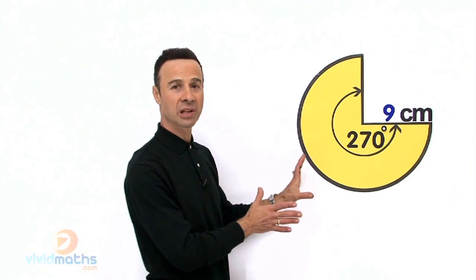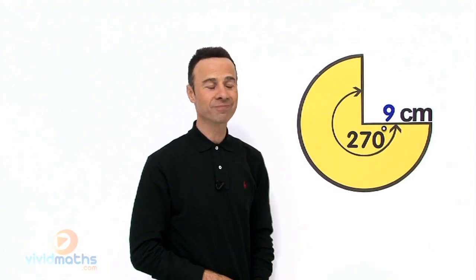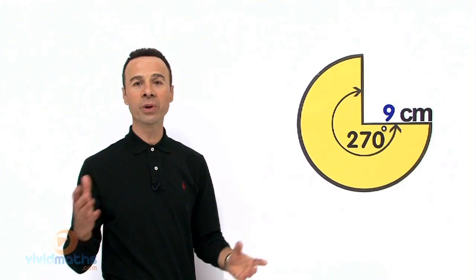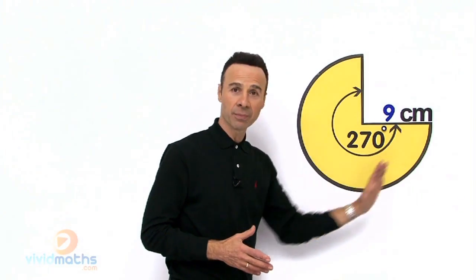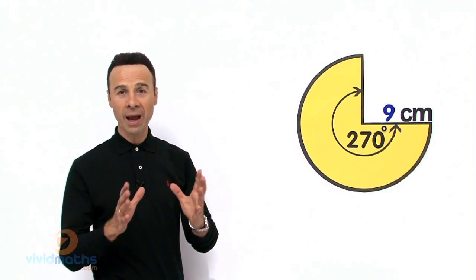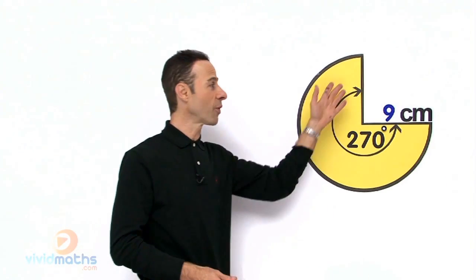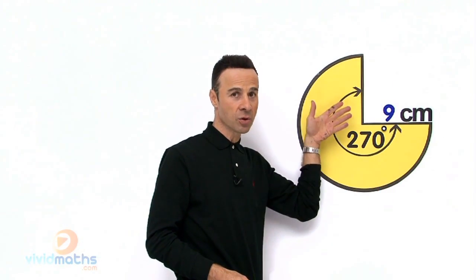So how do we work out what is left in terms of area? Well, doesn't it make sense that all we need to do is know how to work out the full area of a circle, πr², and then multiply that by the fraction of what is left?